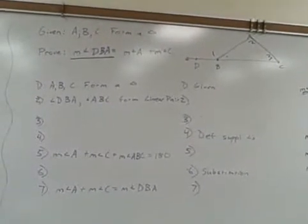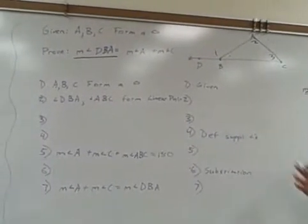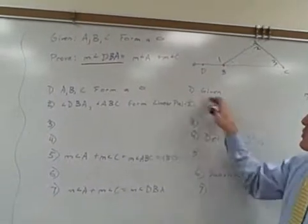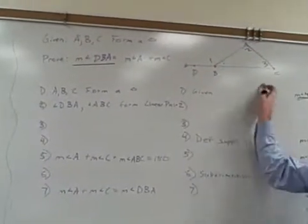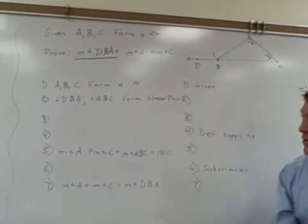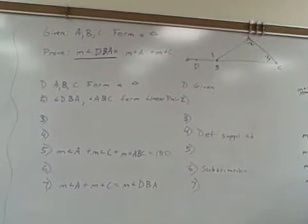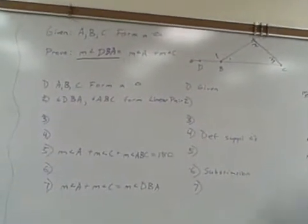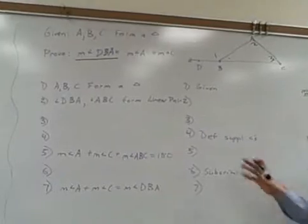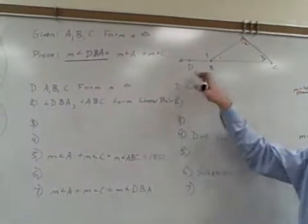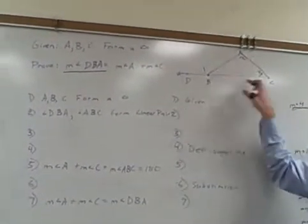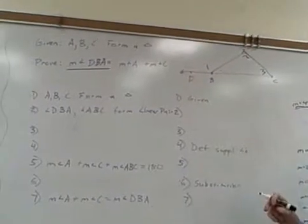Now, for us to do this, we were first given that ABC actually forms a triangle — that was given to us. And that point D was on the ray coming out from BC. They told us that angle DBA and angle ABC form a linear pair.